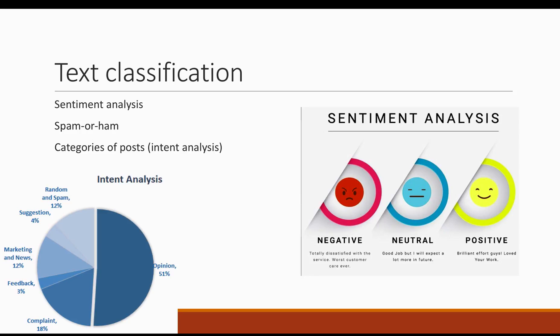Text classification is used in other contexts as well. A very common context is understanding whether an email is spam or not, or categorizing emails into categories such as offers, important emails, or emails from social media. Facebook also uses intent analysis, which tries to understand what the intent behind a comment is. On this pie chart concerning Facebook comments, around half of the comments refer to opinions, but you also have marketing, random comments, spam, or complaints. This pie chart is from an analysis of Facebook comments of a particular group.